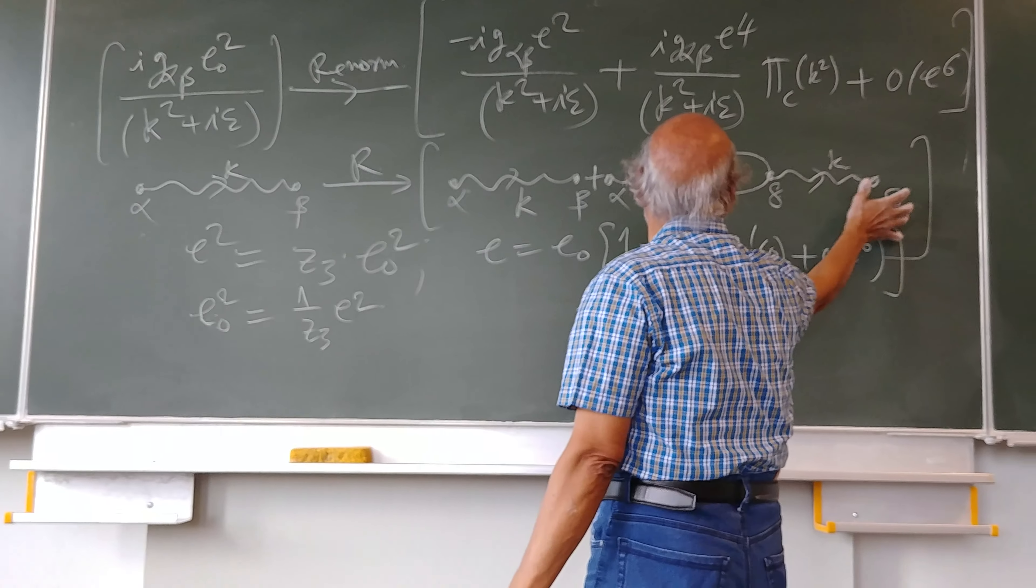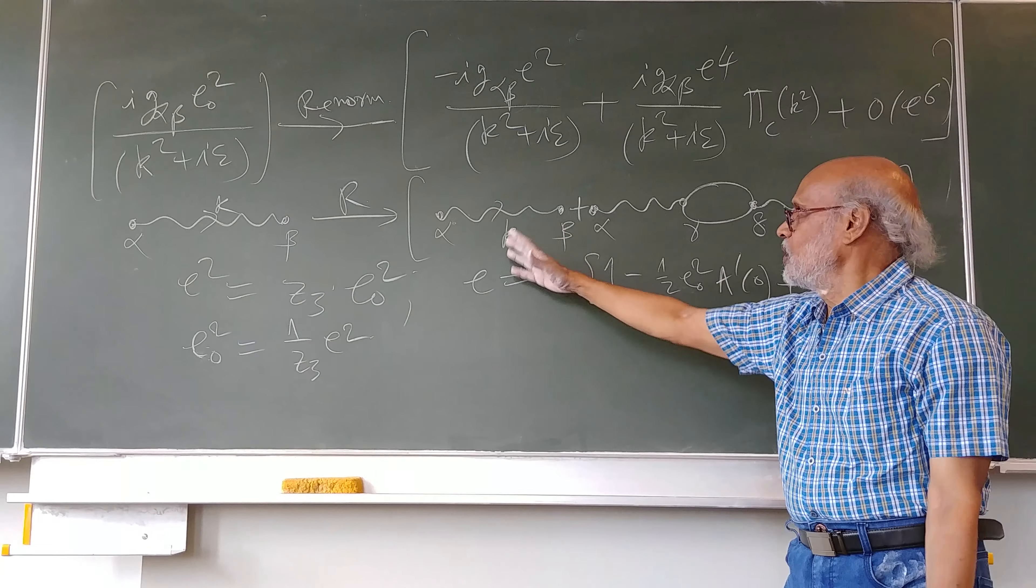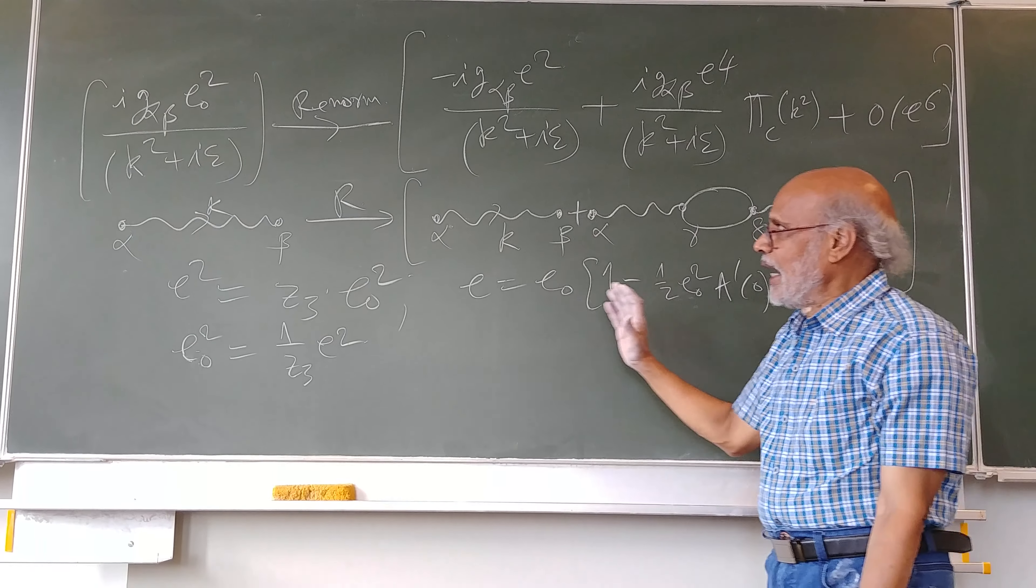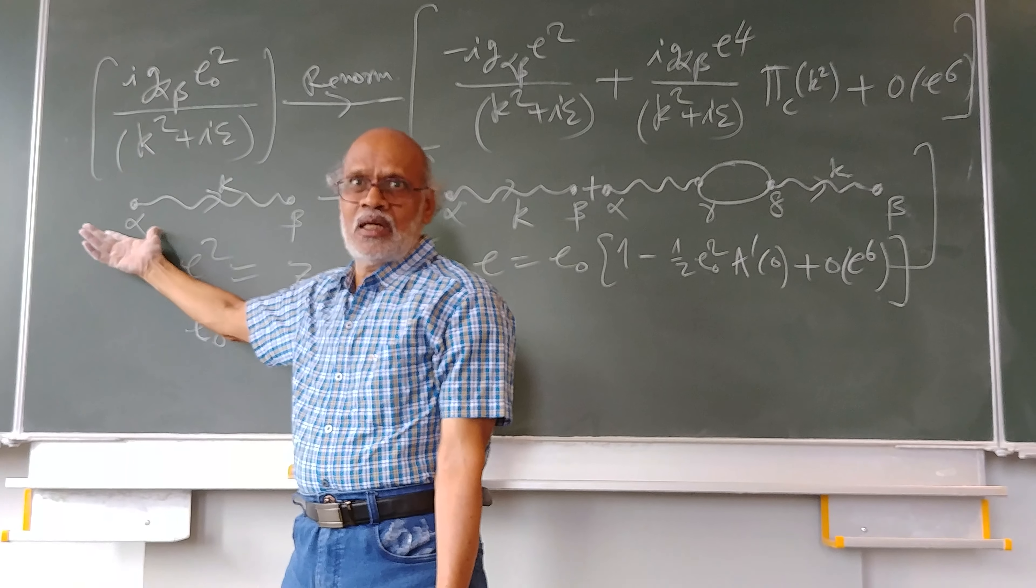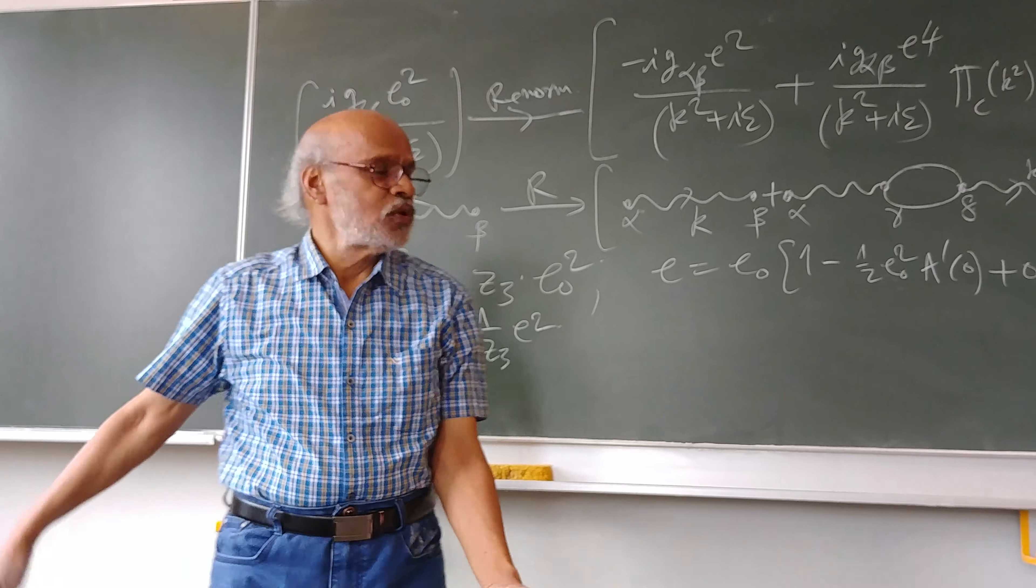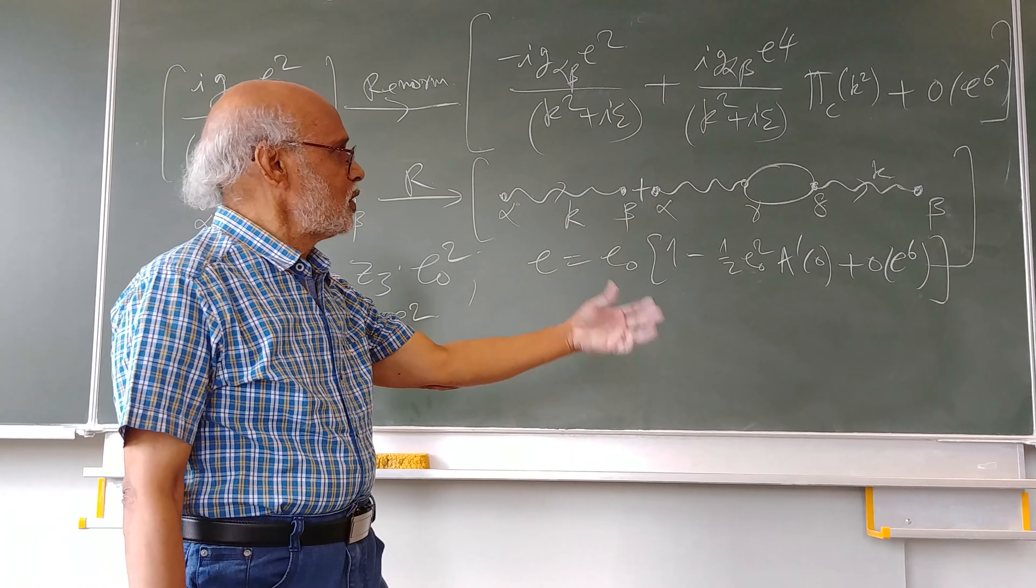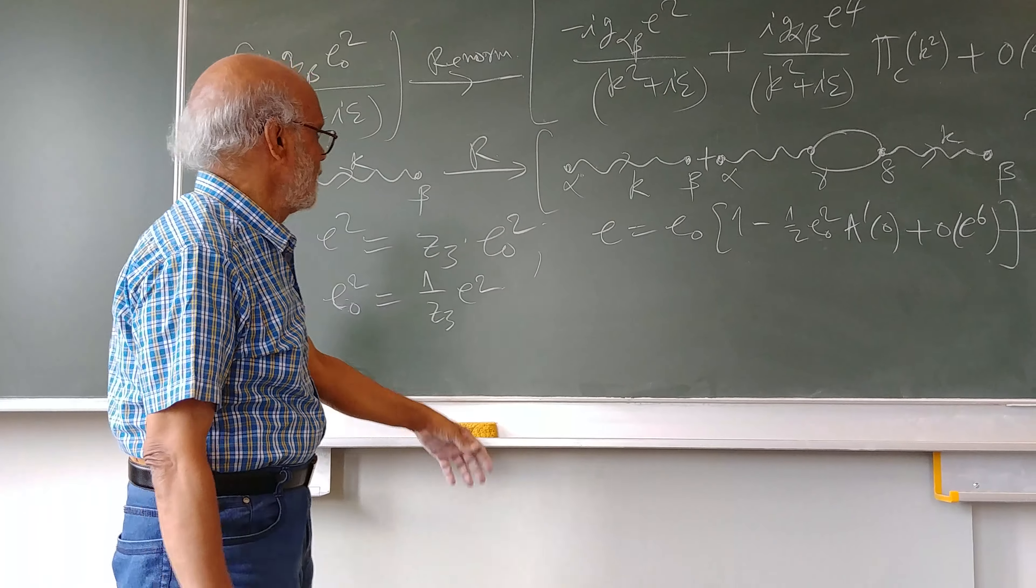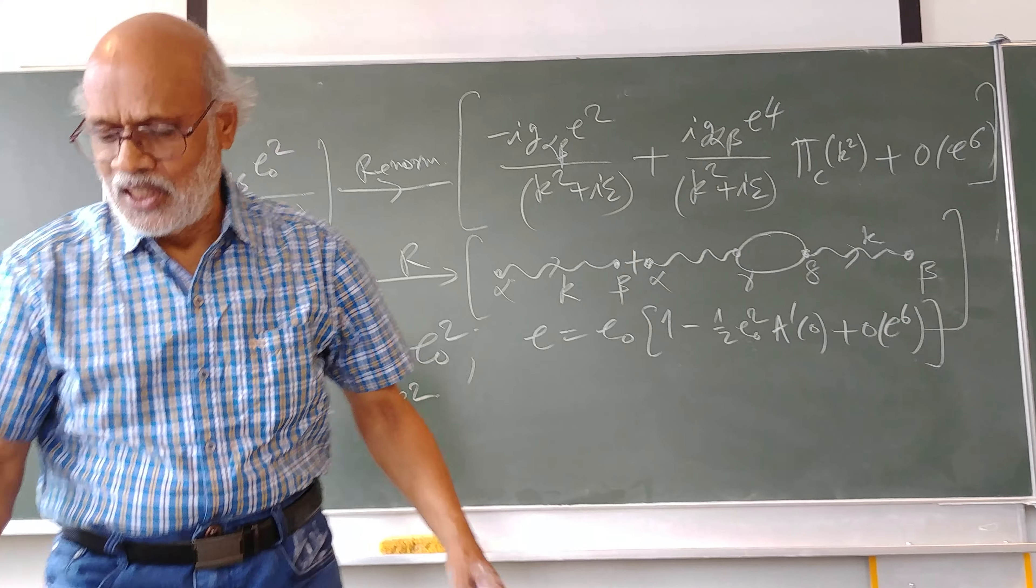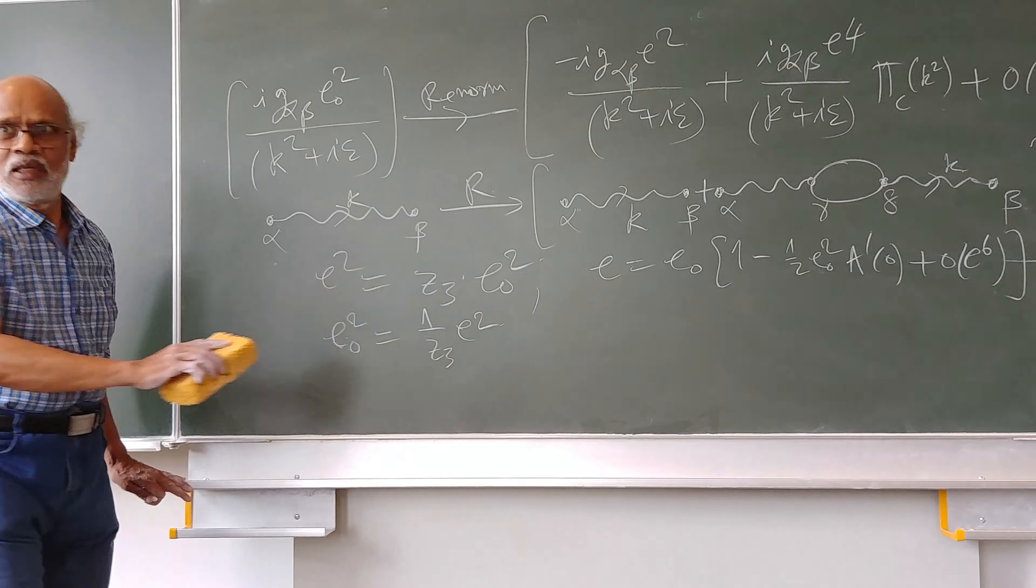This is the renormalized propagator of the photon. So this is a physical thing and this thing corresponds to the bare photon. This corresponds to the physically interacting photon which has already said hello by the others. Let me write one more for the sake of completion.